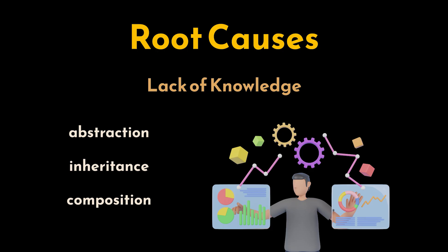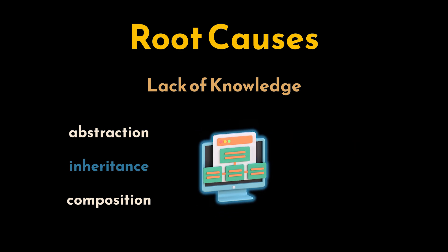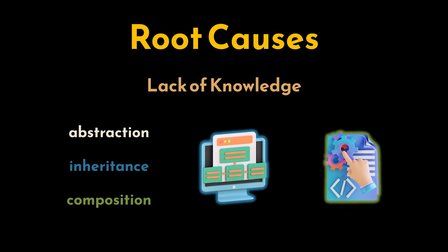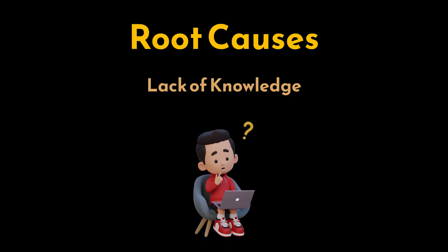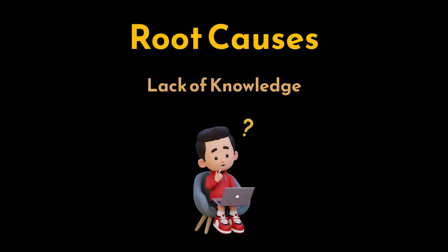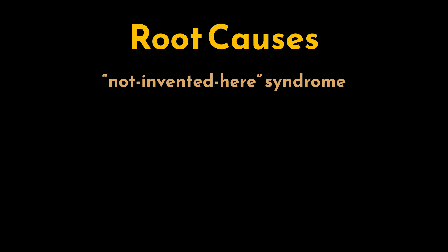These techniques require a solid understanding of software architecture and design patterns, which some developers — particularly those newer to the field — might not yet have mastered. For example, inheritance allows developers to define a general structure or behavior in a base class that can be reused and extended in derived classes. Composition, on the other hand, encourages breaking down code into smaller reusable components that can be combined in various ways. Without a strong grasp of these principles, developers might see copying and pasting as the easiest option.